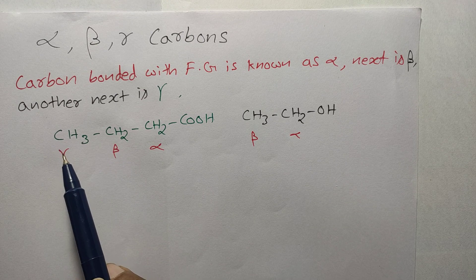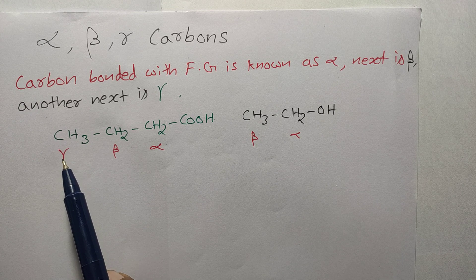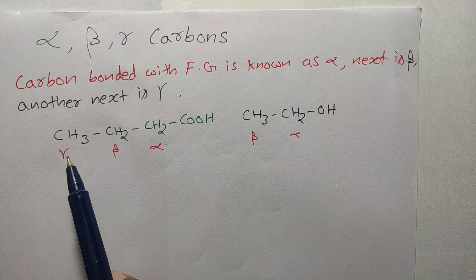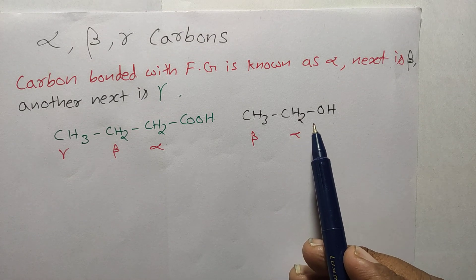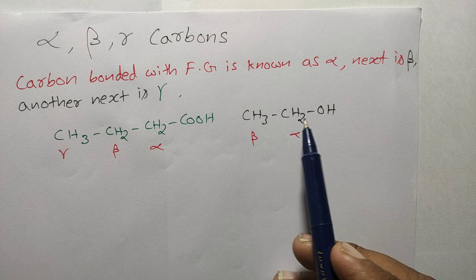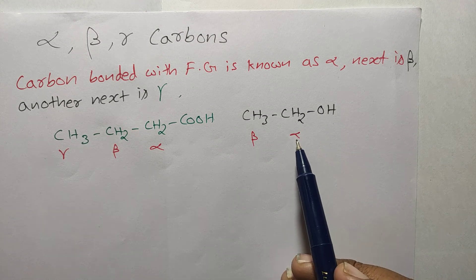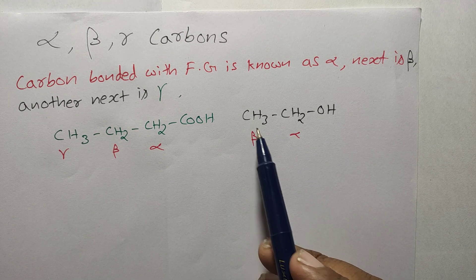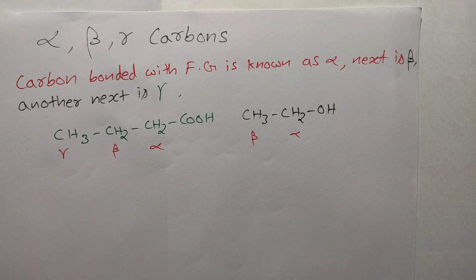The next carbon is the gamma carbon. Now taking another example: this is an OH functional group. This carbon bonded with the functional group OH is the alpha carbon, and the next carbon is the beta carbon.